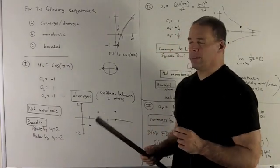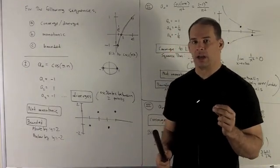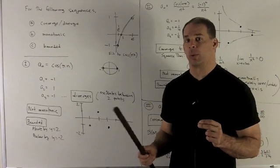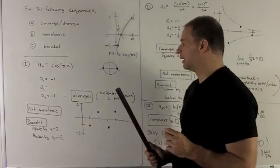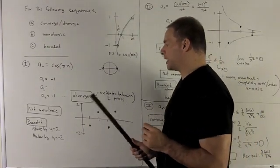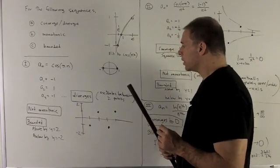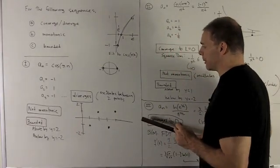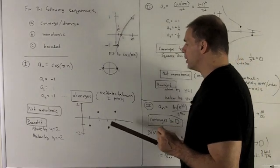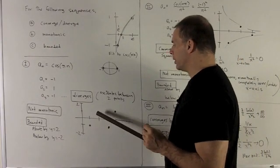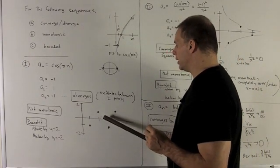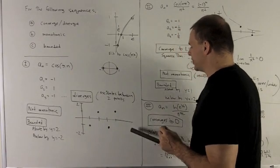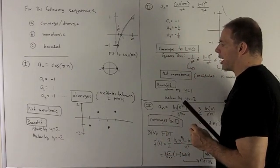So this is going to diverge because it's never going to settle on a given number — it's going to keep bouncing back from −1 to 1. Next, let's check monotonic. Let me graph our sequence against the n-axis: at 1 we have −1, next integer 2 we go to 1, come down we go to −1, go to 4 we get 1. And it's going to keep going back and forth like this forever.